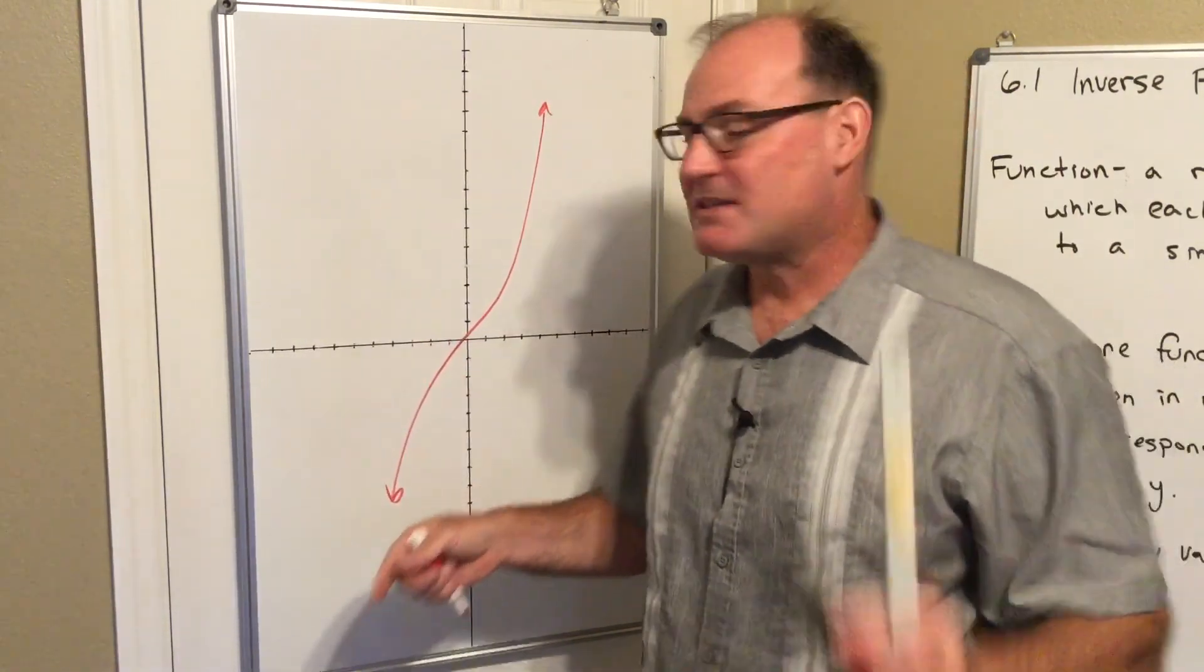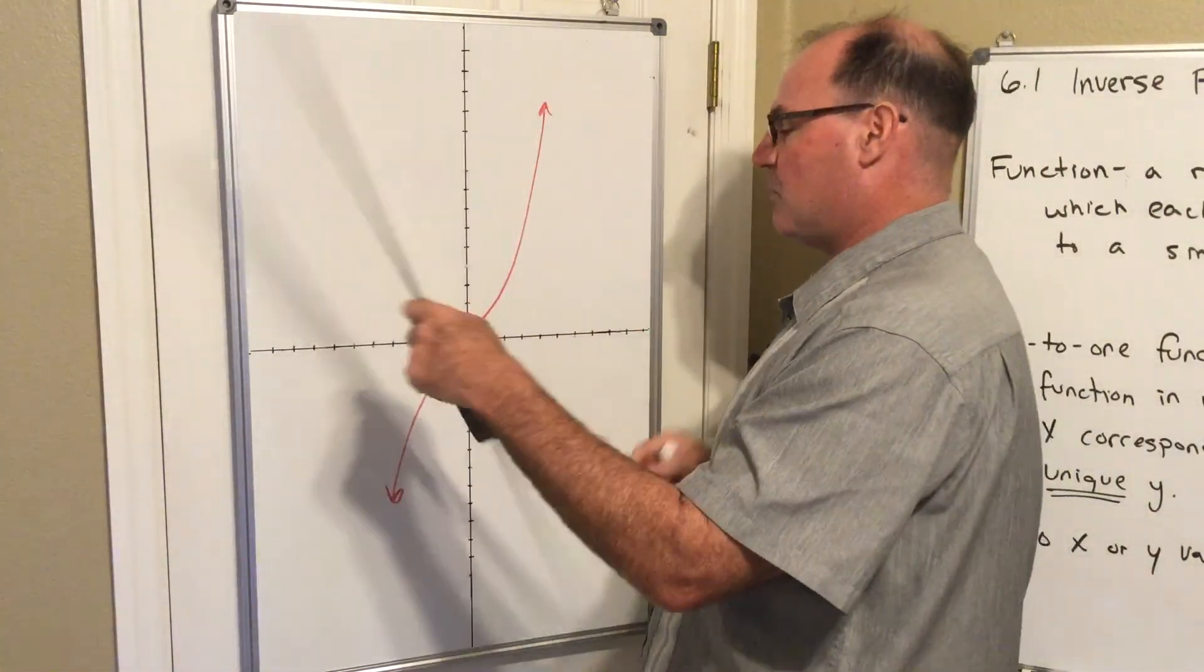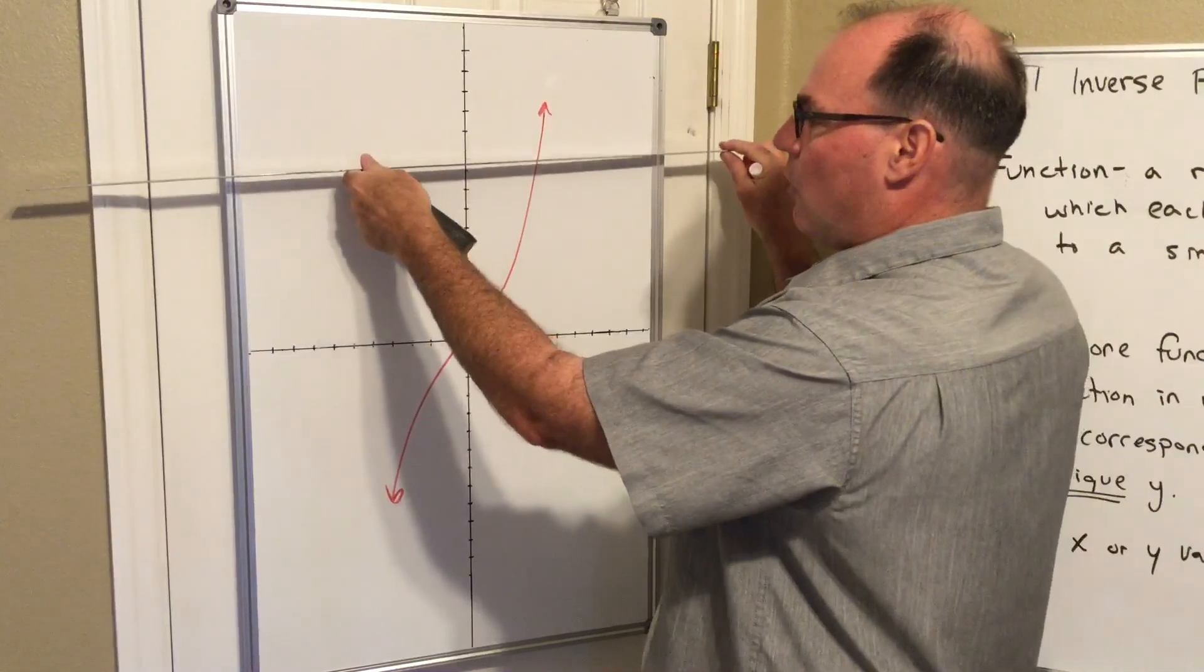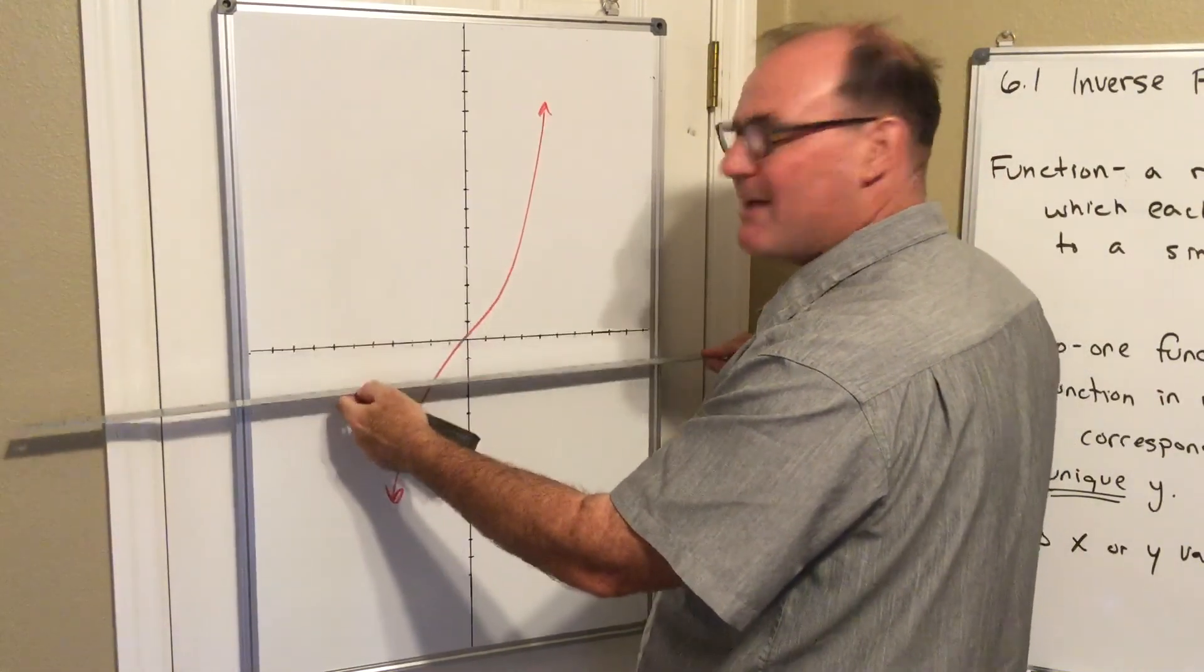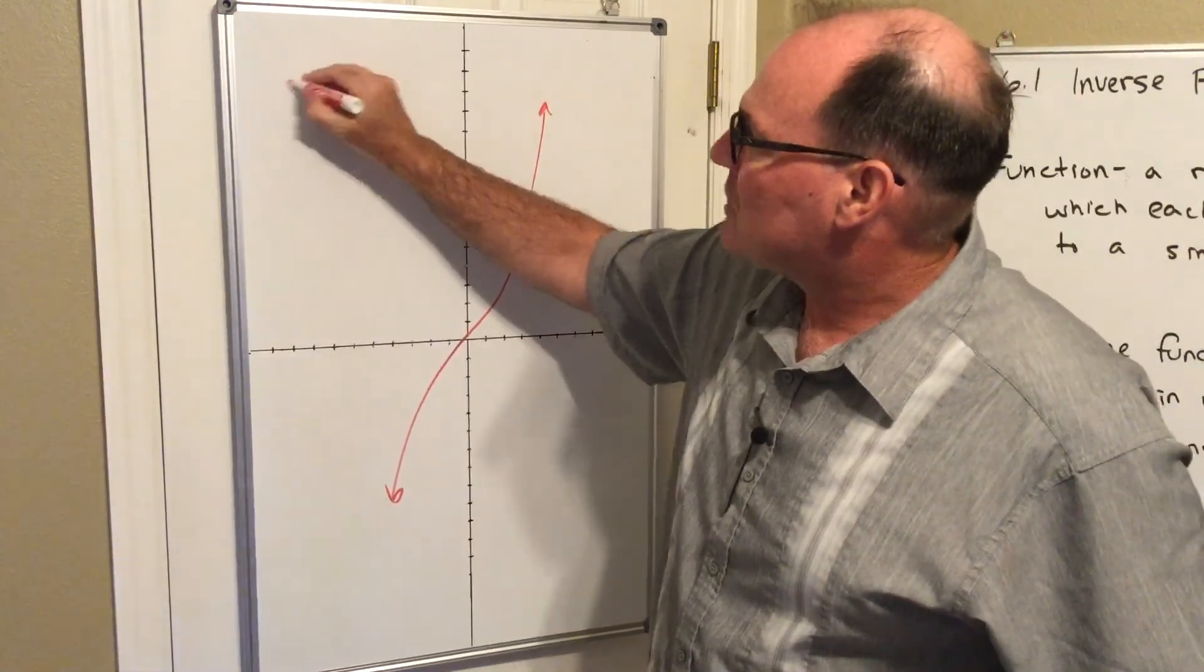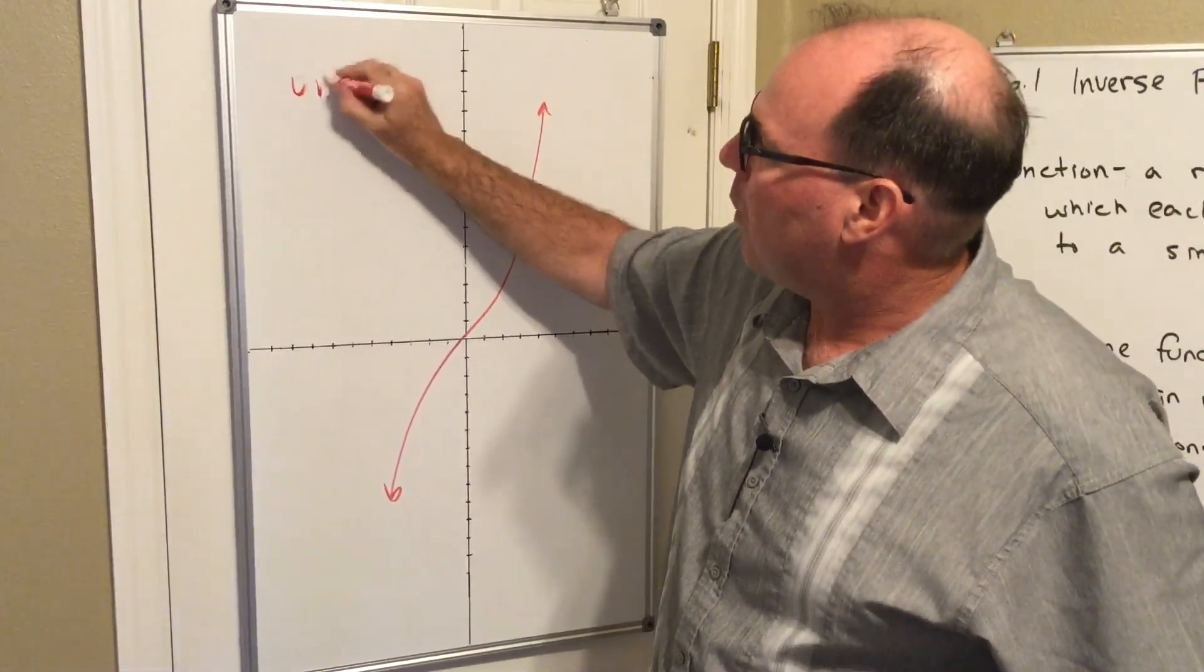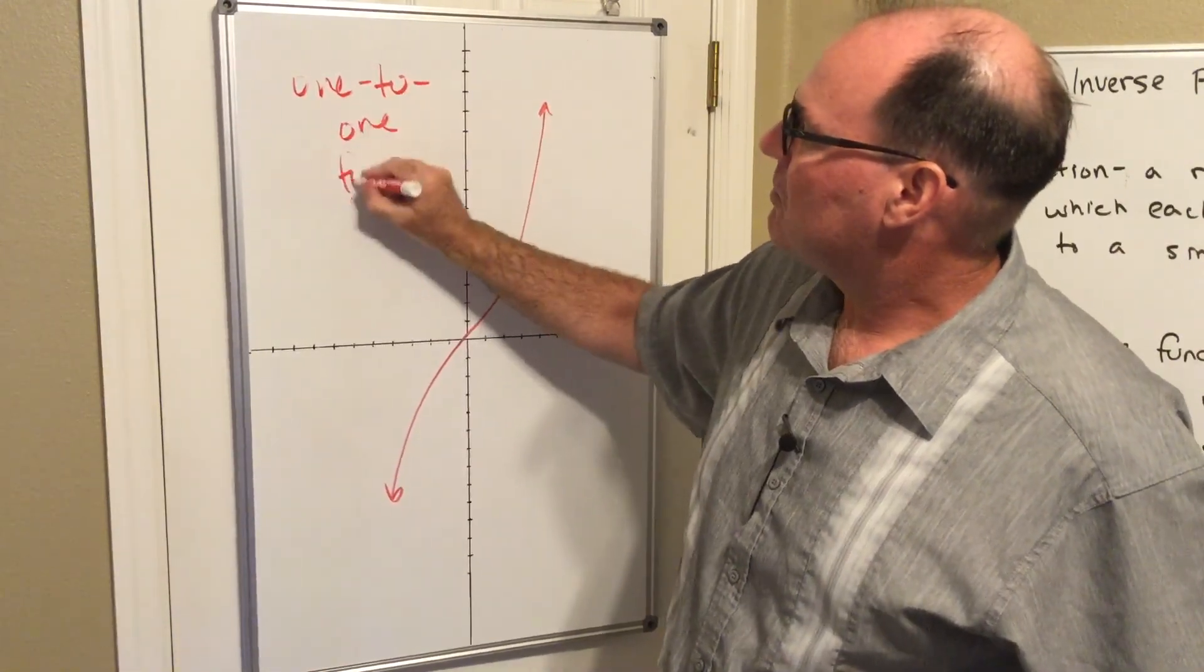Okay, hopefully you paused. Notice when I take my horizontal line, the horizontal line passes through the graph one place. That means each y value is used one time. So this is indeed what's called a one-to-one function.